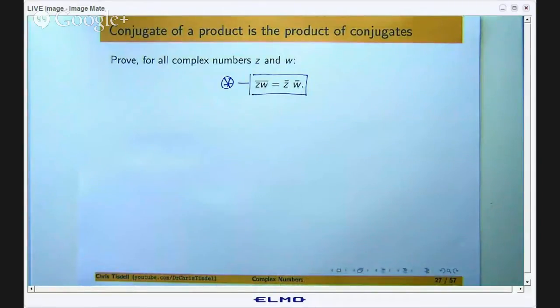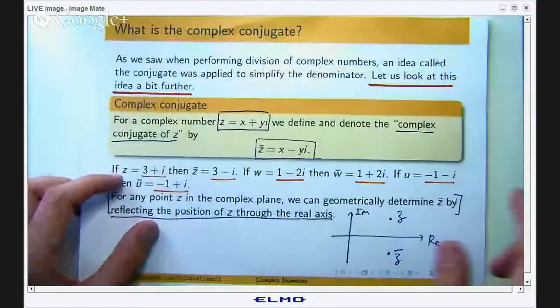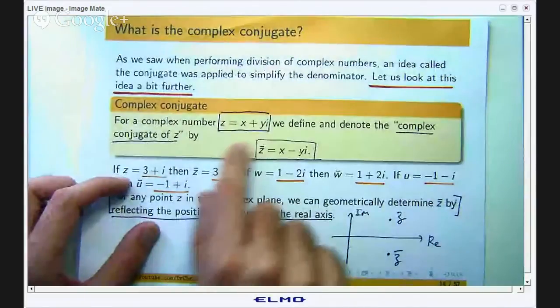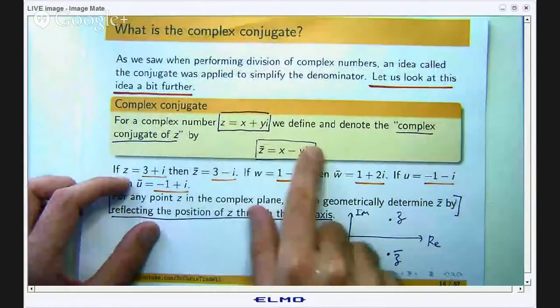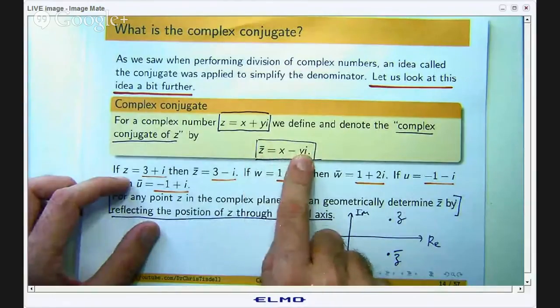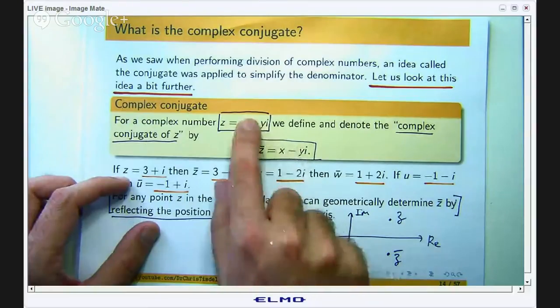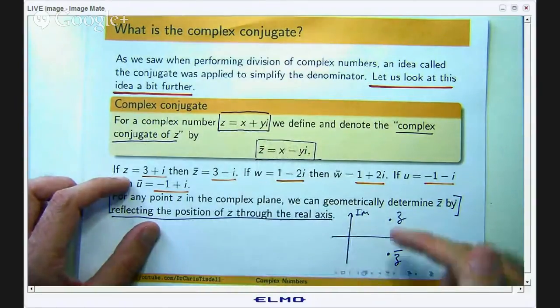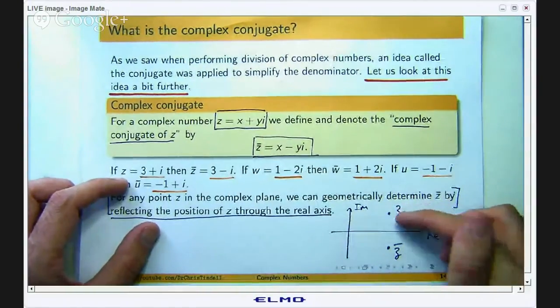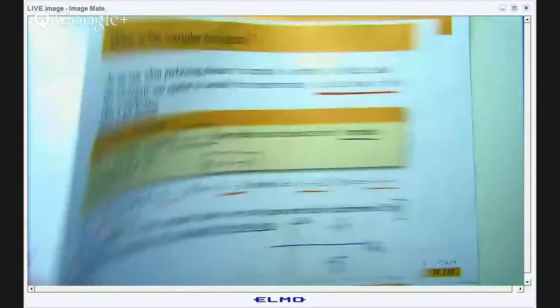Now just a little bit on notation and to refresh your memory. If you have a complex number written in Cartesian form then the complex conjugate or the conjugate of z is denoted by z bar and it is x minus yi. So you just change the sign of the coefficient of i and geometrically if you have a point in the complex plane to get the conjugate you just reflect that point in the horizontal axis.